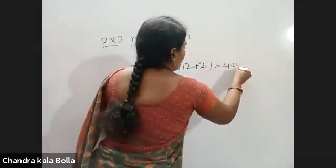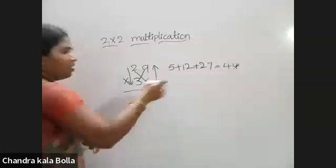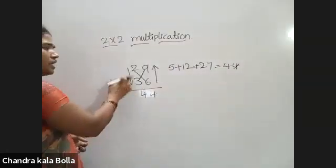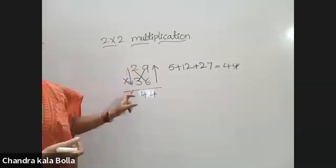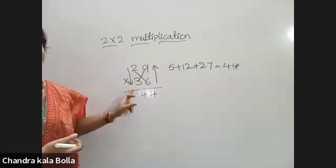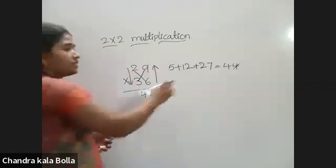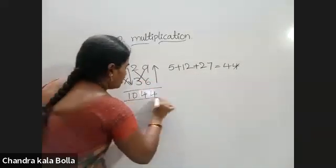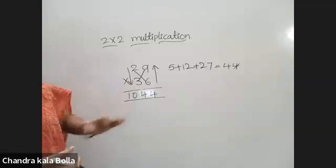So 44: the ones place value is 4, carry 4. Next, the hundreds place: 3 into 2 or 2 into 3 — you can multiply this way. 3 twos are 6. 6 plus 4 carry is 10. It's simple — you can divide everything in the same way using simple identifiers.